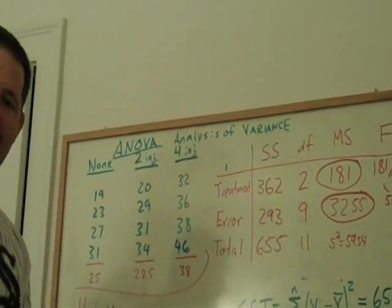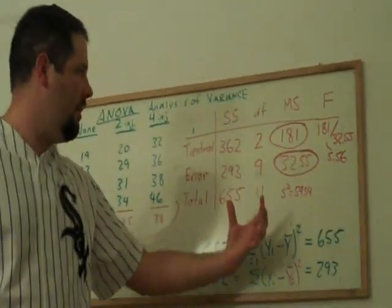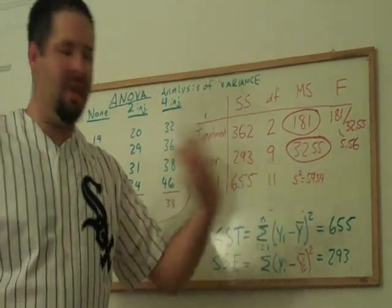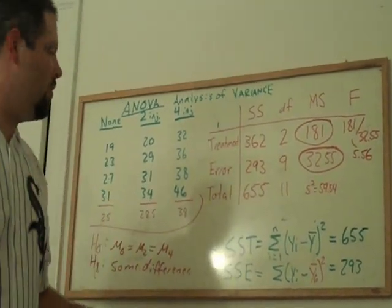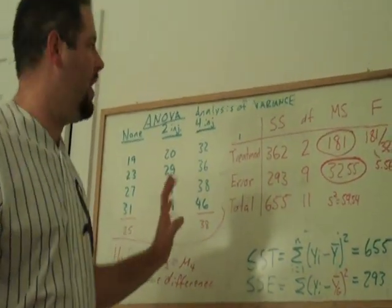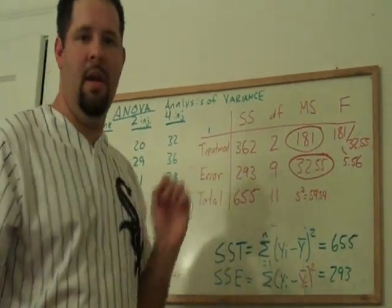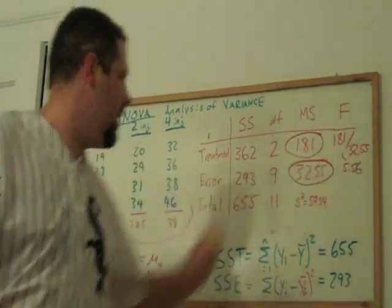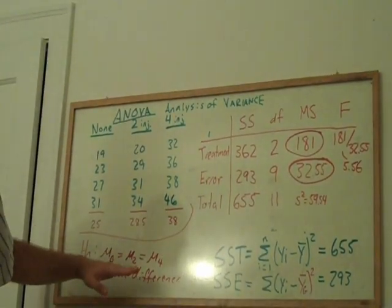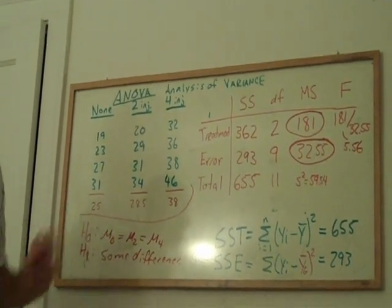And so then that is really the usefulness of the ANOVA table. And it really shows you kind of how we can analyze variance and how we can use it to purposefully test meaningful null hypotheses against alternatives.